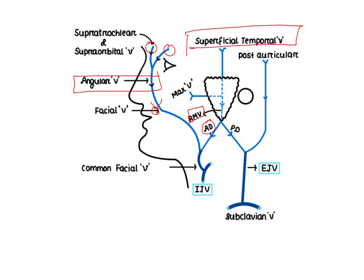The superficial temporal vein passes through the parotid and, together with the maxillary vein, forms the retromandibular vein. The retromandibular vein has two divisions: an anterior division and a posterior division. The anterior division confluences with the facial vein to form the common facial vein, which then drains into the internal jugular vein.